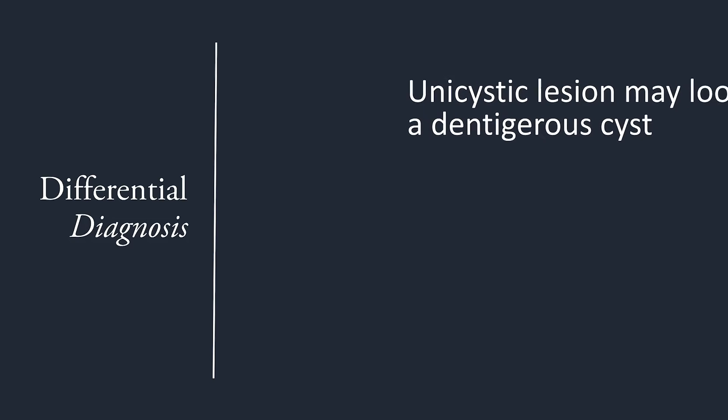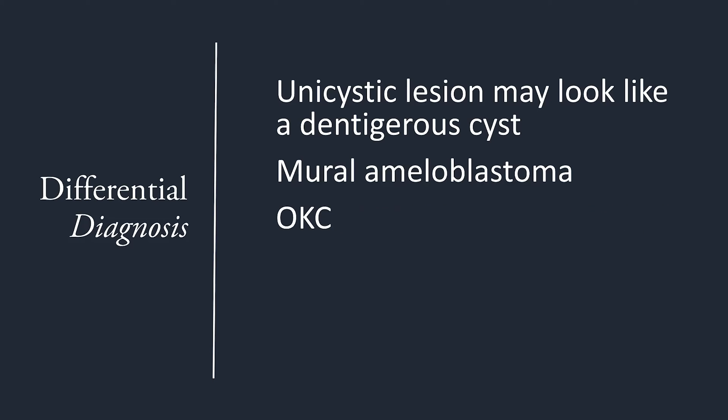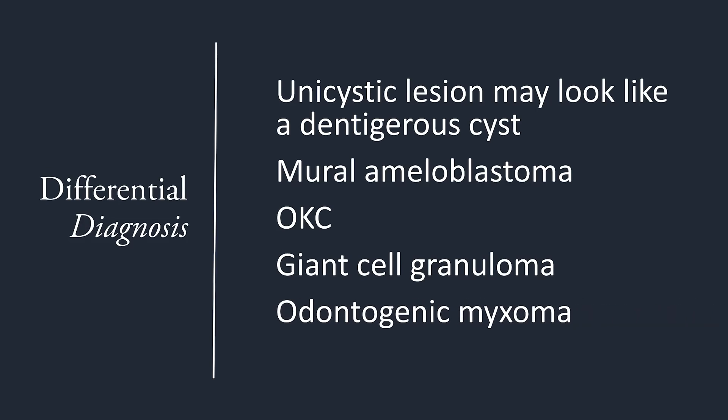Unicystic ameloblastoma may look like a dentigerous cyst. Therefore, it's important that you do a histopathological examination of any lesion that looks like a dentigerous cyst. Remember that unicystic ameloblastoma may arise from the walls of a dentigerous cyst. Odontogenic keratocysts may also have a multilocular appearance and may look like an ameloblastoma. Other multilocular lesions, such as giant cell granuloma or odontogenic myxoma, should be considered in the differential diagnosis.